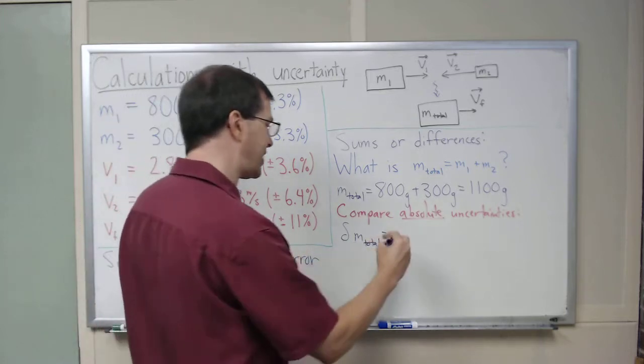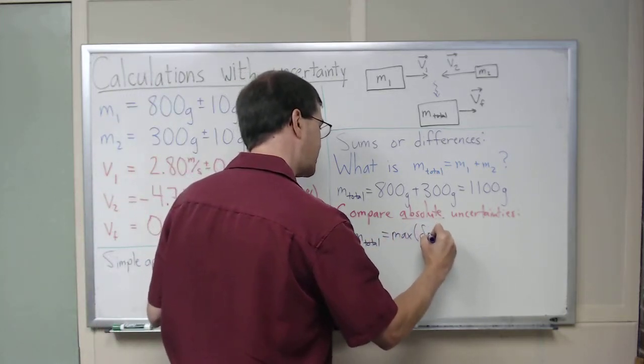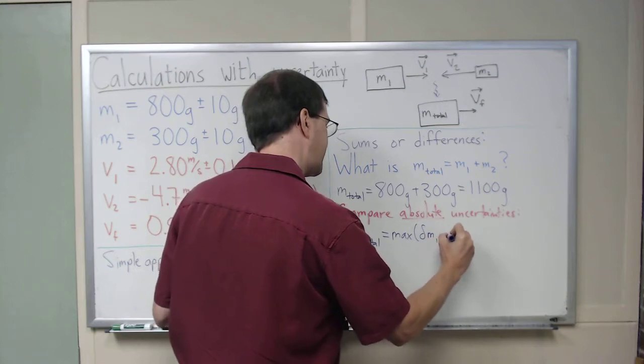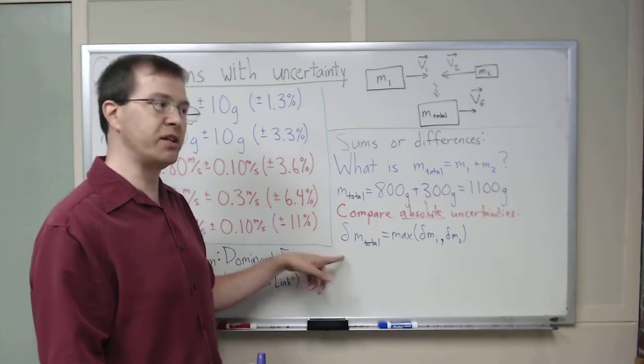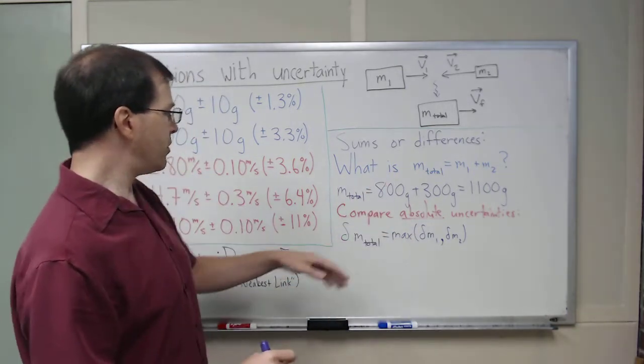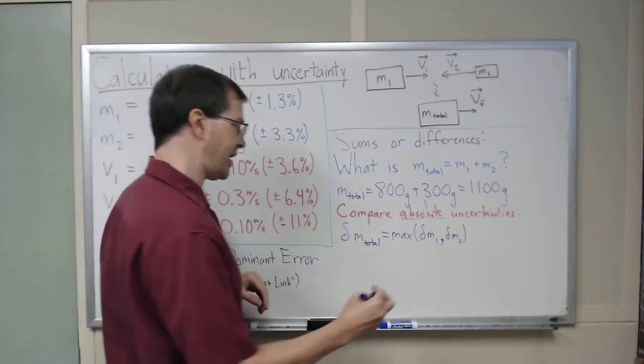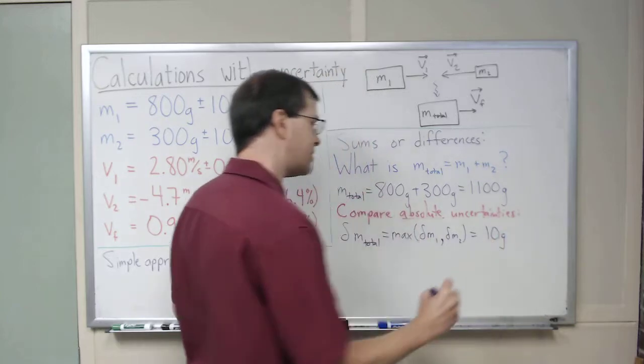I suppose I could write that as a maximum of the uncertainty in m1 and the uncertainty in m2. These deltas, of course, lowercase Greek delta just means uncertainty in. So there we are, maximum of those. Well these are the same in this case, so we just say that it is in fact 10 grams.